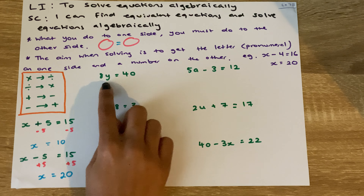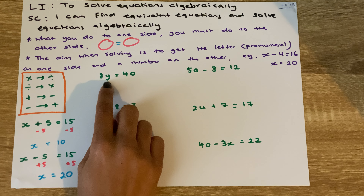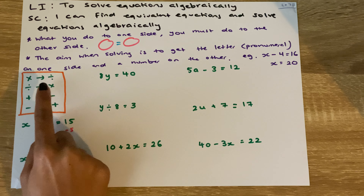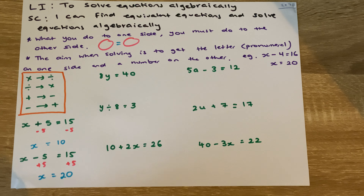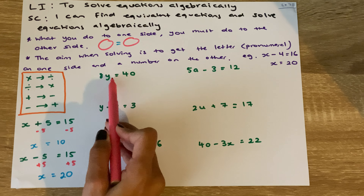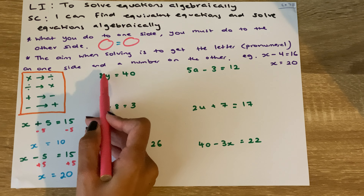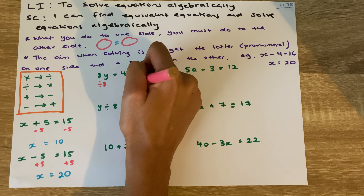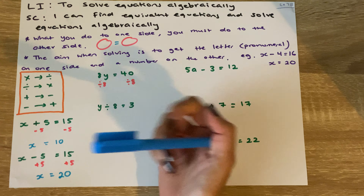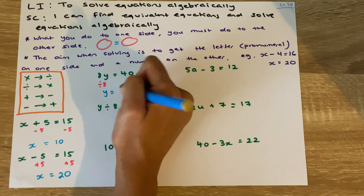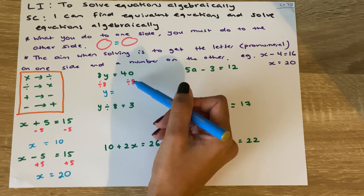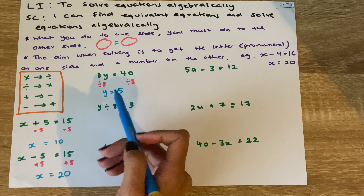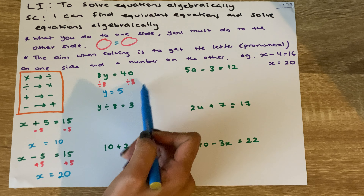Here we're looking at multiplication. If there is a number and a letter written next to each other without any symbol between them, that means it is a times sign. So for 8y equals 40, the opposite of multiplication is division. We want the letter on its own, so we divide both sides by 8. 8 divided by 8 cancels to 1, leaving y. And 40 divided by 8 is 5, so y equals 5. Checking: 8 times 5 is in fact 40 — correct.